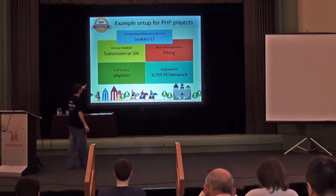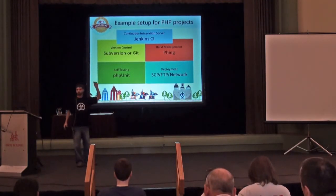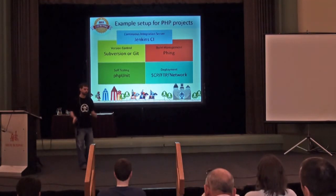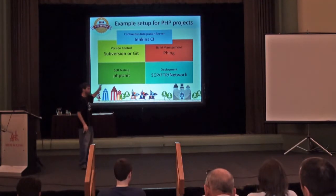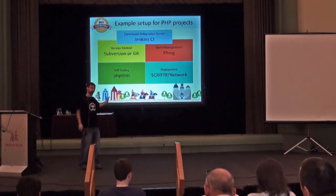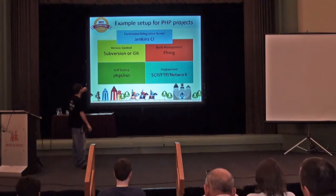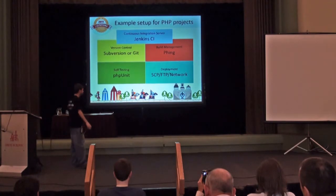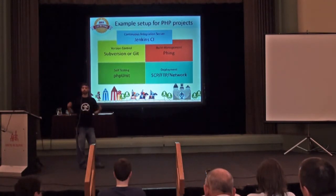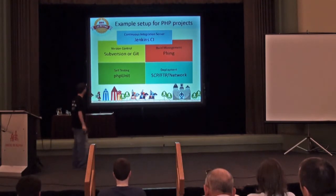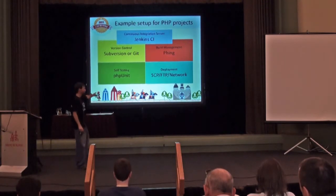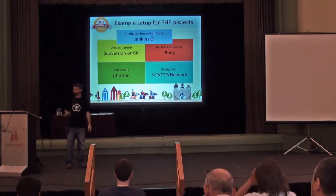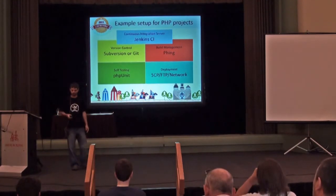Jenkins CI is an example — it was also known as Hudson, but after an Oracle copyright issue the Jenkins project broke away and now pretty much everyone who worked on Hudson is in Jenkins. For version control I suggest Subversion or Git: Subversion is a little easier to get started with, and Git is more powerful for larger teams. For build management I use Fing, for self-testing PHP Unit, and for deployment various things — we use secure FTP and also copy files onto our network.